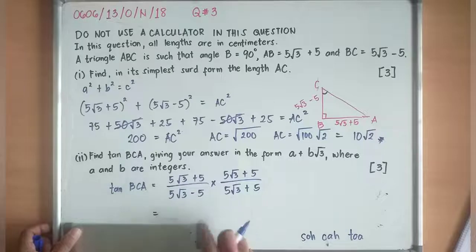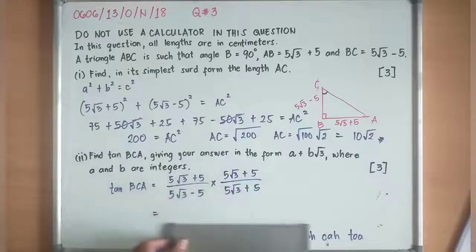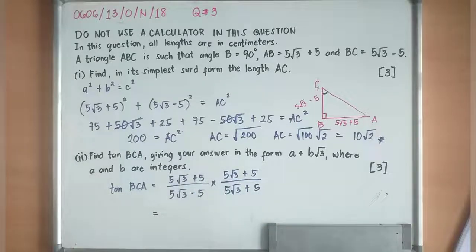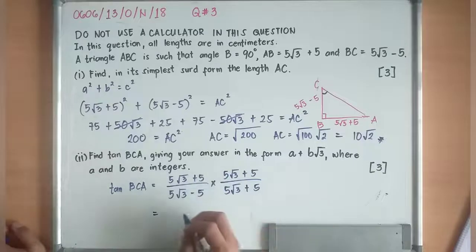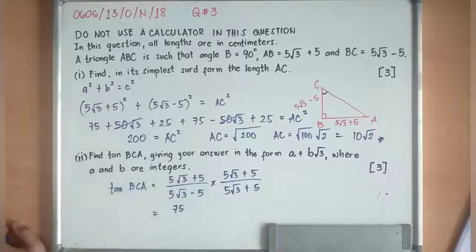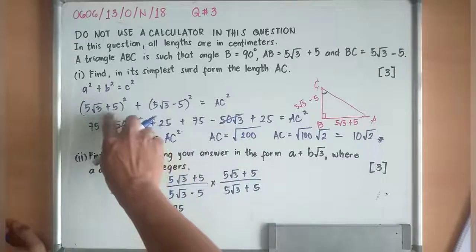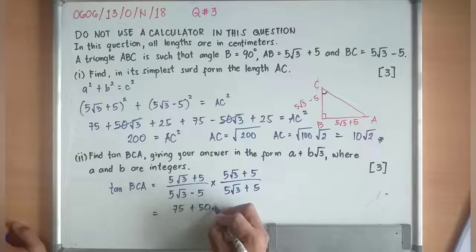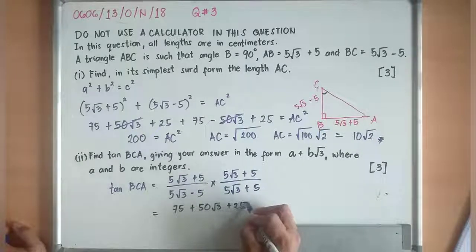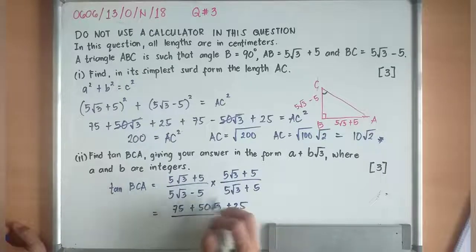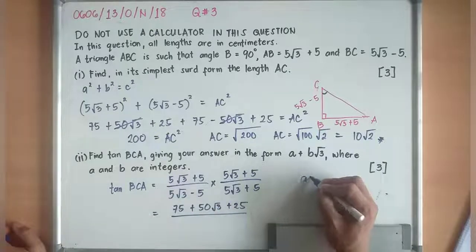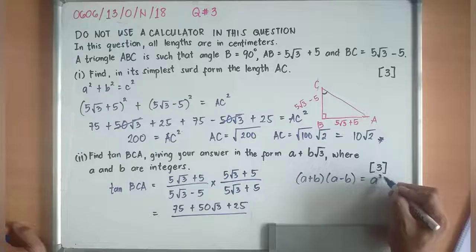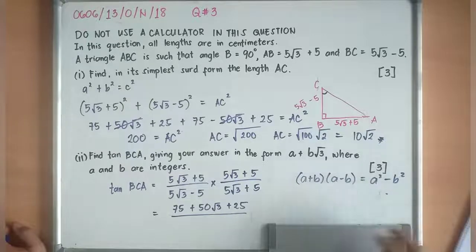So I'll come up with 5√3 × 5√3 is equivalent to 25 × 3, 25 × 3 is 75. Since they are the same, it's like what we did here. So 75 + 50√3 + 25 divided by, now you see, you have the rule (a + b)(a - b) is equivalent to a² - b². So let's just apply this one.